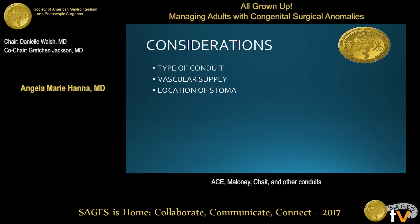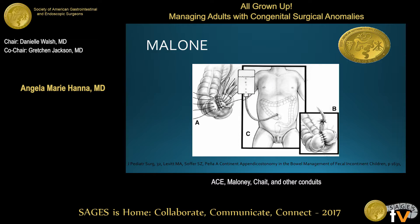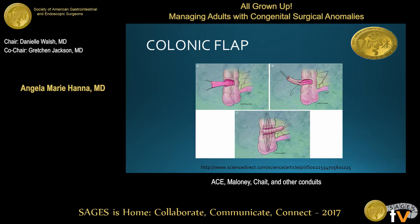The Malone is an appendicostomy made by creating a continent valve by imbricating the base of the appendix with the cecum around it, similar to a Nissen imbrication. The appendicostomy is then brought out through the umbilicus, and the patient is able to insert a tube into the stoma at the umbilicus to administer the enema. The tube can be removed in between administrations.